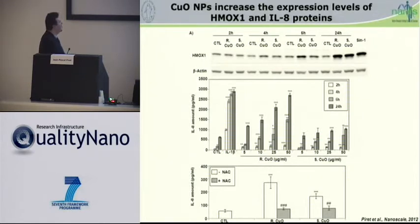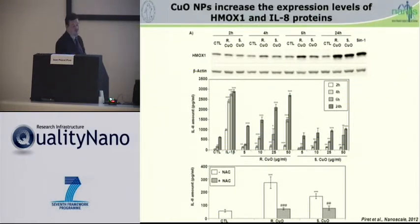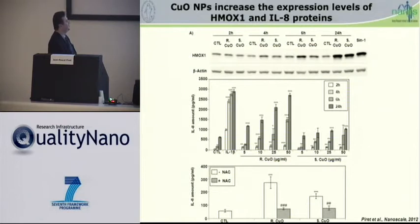When we used the antioxidant N-acetylcysteine, we were able to drastically reduce the production of interleukin-8, suggesting that the oxidative stress generated by copper oxide nanoparticles could modulate in part the expression of some genes like interleukin-8 implicated in the inflammatory response.